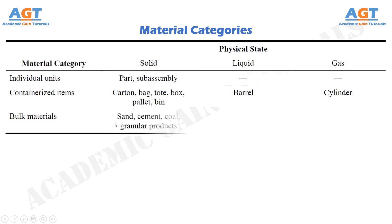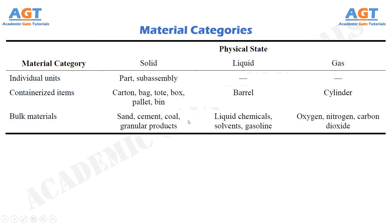Sand, cement, coal, and other similar granular products are considered bulk materials in the solid state. Liquid chemicals, solvents, and gasoline are bulk materials in their liquid state. Oxygen, nitrogen, and carbon dioxide can be examples of bulk materials in the gaseous state.